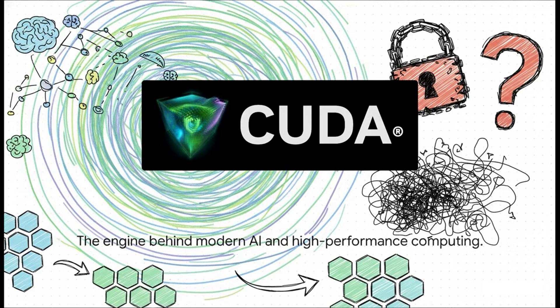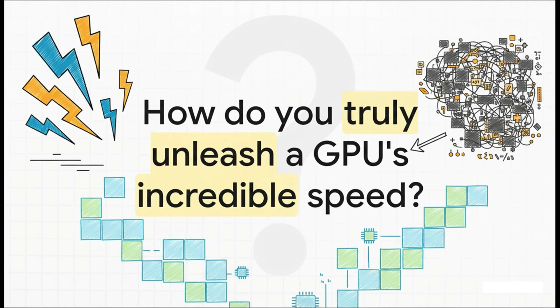Okay, let's get right into it. For years, this logo has represented an almost unbelievable amount of computational power. But getting access to that power has always come with a pretty significant catch. That's really the core question for our explainer today. You have this promise of incredible, nearly instantaneous speed, but actually harnessing it has been this super complex, painstaking process, something really only expert developers could do.